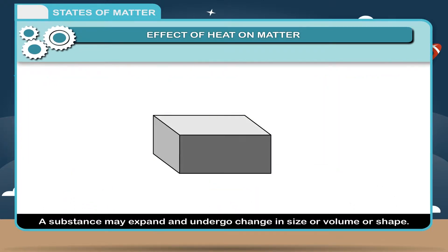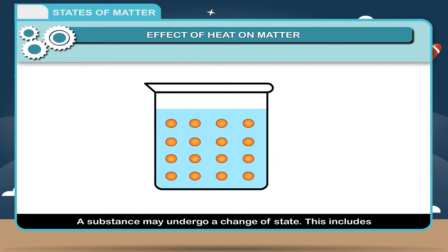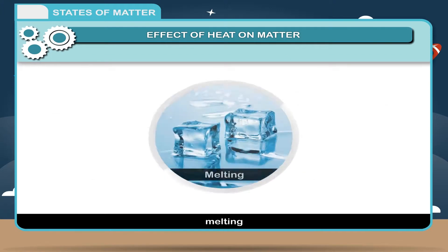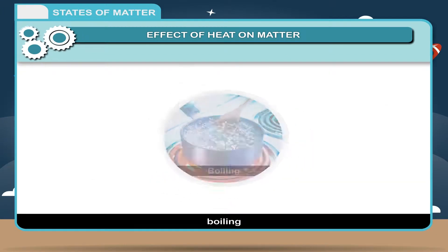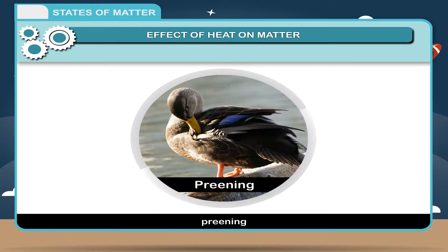A substance may expand and undergo change in size, volume, or shape. A substance may undergo a change of state. This includes melting, boiling, evaporation, sublimation, condensation, and freezing.